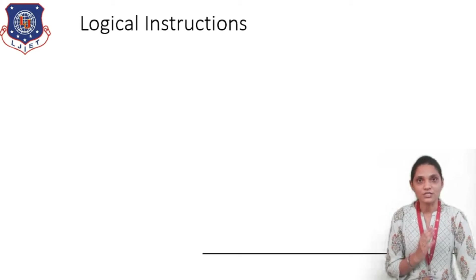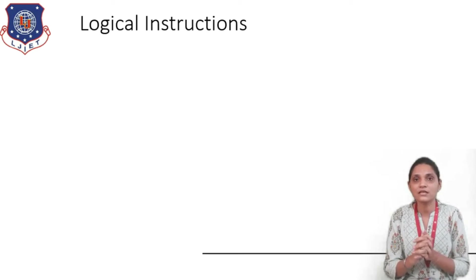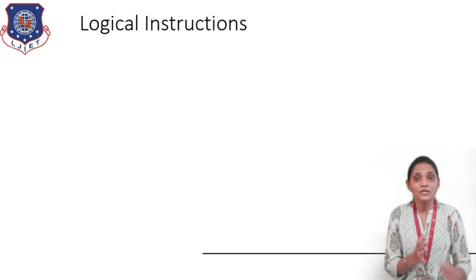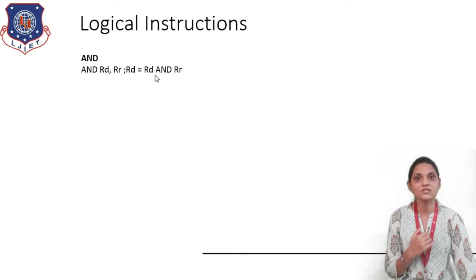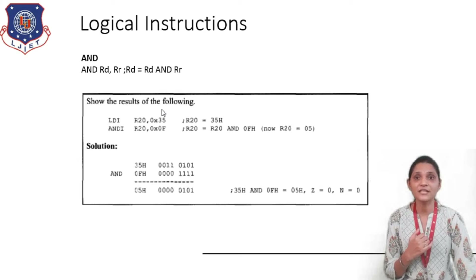Next we will see the logical instructions. There are many logical instructions like AND, ORI, EXOR, compare, complement, and so on that can be performed inside the controller. For the AND instruction, the syntax is: AND Rd, Rr — where Rd is the destination register and Rr is the source register. The AND of the contents of Rd and Rr is performed and the result is stored inside register Rd.